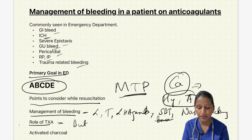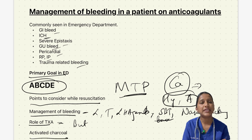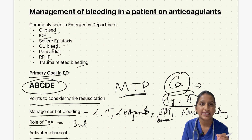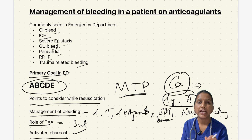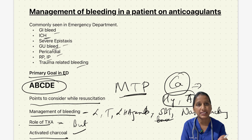Activated charcoal increases elimination of all DOACs and can therefore be used within a few hours in cases of bleeding after overdose or accidental ingestion. Next, all anticoagulants, antiplatelets, NSAIDs, and anti-inflammatory drugs that the patient is taking must be stopped.